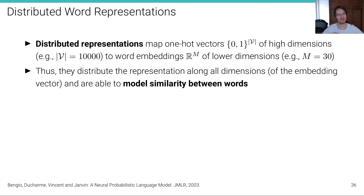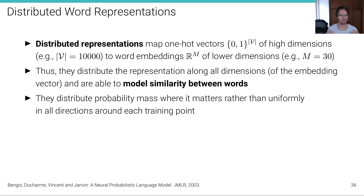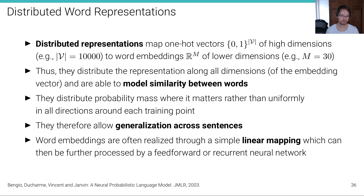The semantics of a word are now distributed in the representation. The advantage is that we're now able to model similarity between words. Another way of thinking about this: distributed representations distribute probability mass where it matters, rather than uniformly in all directions around each training point. Because all distances are the same in one-hot space, we can now model something more informative, and therefore these representations allow generalization across sentences.